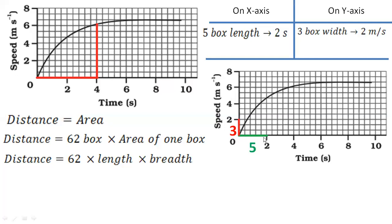The first value you can see on the x-axis is two seconds. From this two seconds you can calculate the length of one box. First find out how many boxes make two seconds: one, two, three, four, five — five boxes makes two seconds. On the y-axis, how many boxes make two meter per second? One, two, three — three boxes makes two meter per second.